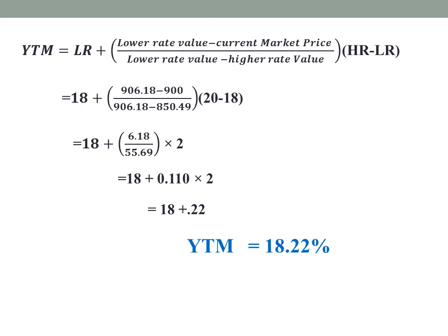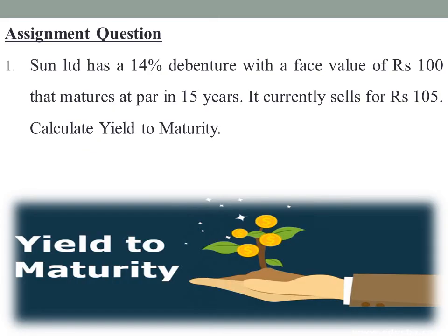Here we have an assignment question: Sunlimited has a 14% debenture with a face value of Rs.100 that matures at par in 15 years. It currently sells for Rs.105. Calculate the yield to maturity. For better understanding of the method, please work it out. In this session we discussed the calculation of yield to maturity using the trial and error method. Hope all are clear with the topic. Thank you.